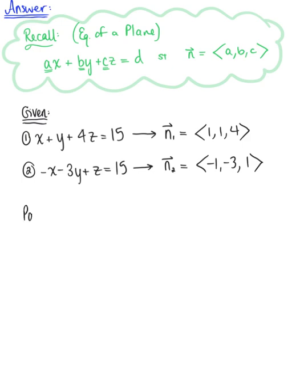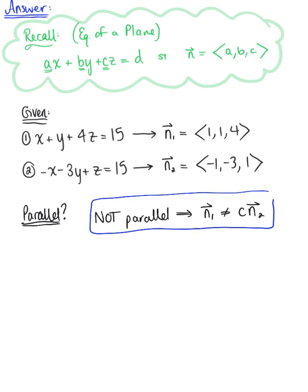So let's check if they are parallel first. And looking at these two normal vectors, we think, no way, they are not parallel. These planes are not parallel to each other. Why? Well, these two vectors have no scalar multiples. Vector n sub 1 does not equal a scalar multiple of vector n sub 2. They have no common factors. So this confirms that these two vectors are not parallel, and thus the two planes are not parallel.